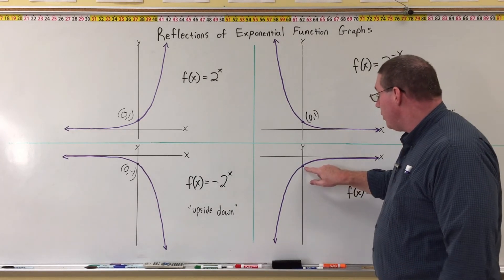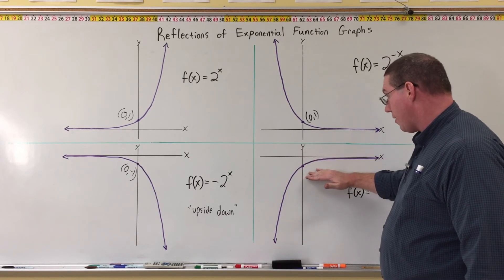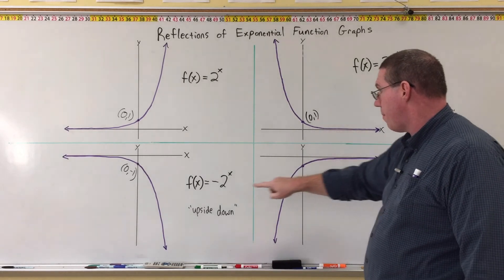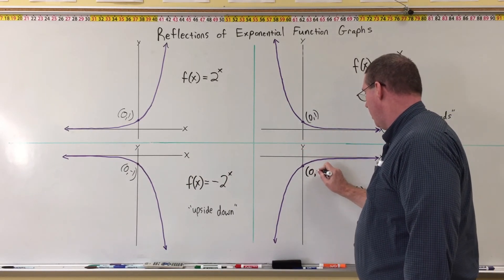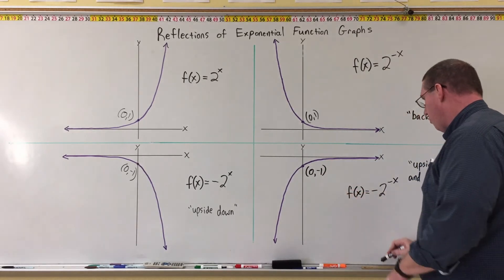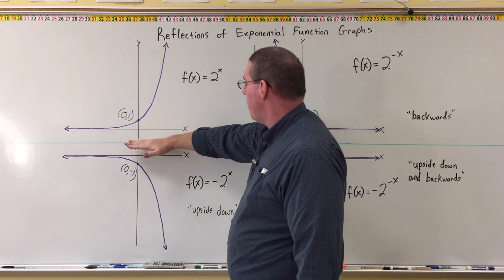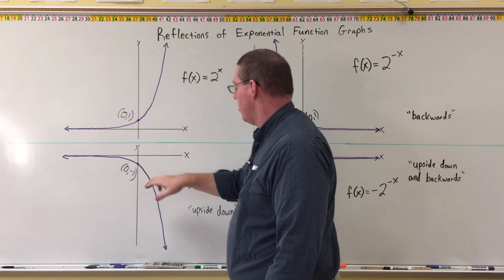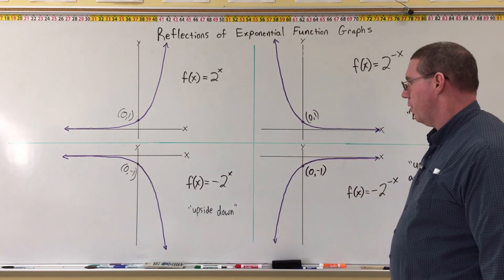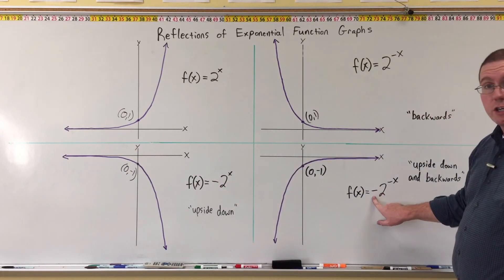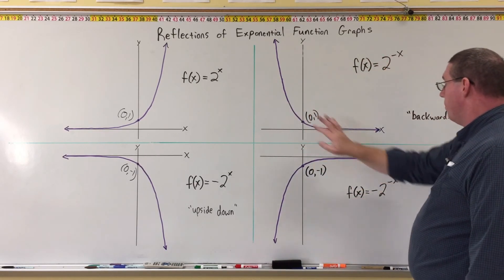Which point does this pass through? At x = 0, this graph is below the x-axis, so is it passing through (0, 1) or (0, -1)? It's passing through (0, -1) because it's below the x-axis. It passes through a point that is below the asymptote. The negative in front of the function is what vertically reflects it. The negative on the exponent is what reflects it sideways, or backwards.